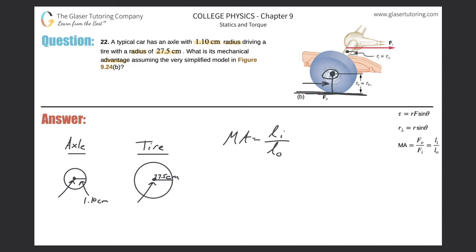So that is the radius of that tire. Same thing would go for the axle. Now let's just plug it all into that equation. So the input value as we said before was 1.10, that's for the axle centimeters, over the output which is for the tire, 27.5 centimeters.